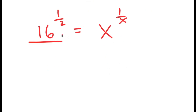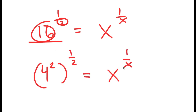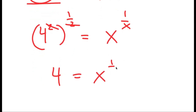My goal is to turn the left side into the form some number to the power of 1 over that same number, so we can make that number our solution. So 16 and 2 need to be the same number. Since 16 is the same as 4 squared, I rewrite it as 4 squared to the power of 1 half. The 2 and the 1 half multiply to give 1, so I'm left with 4 equals x to the power of 1 over x.